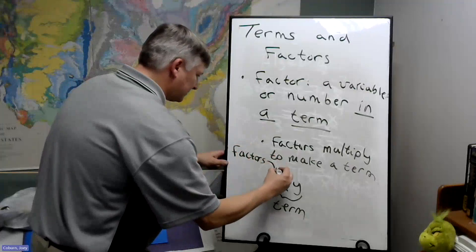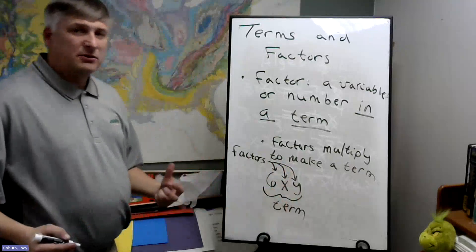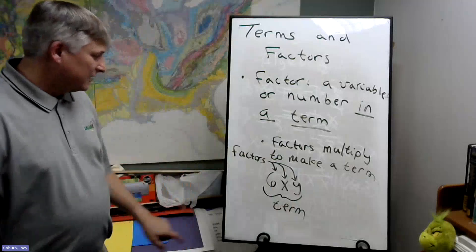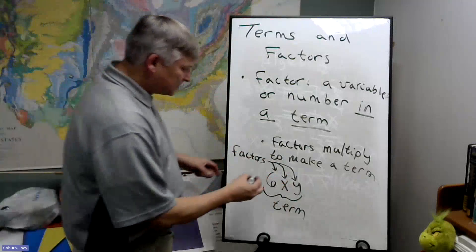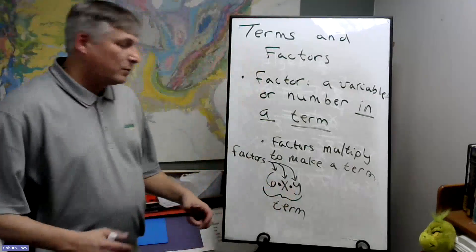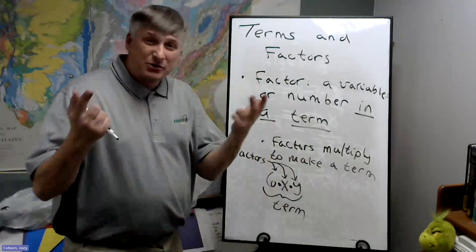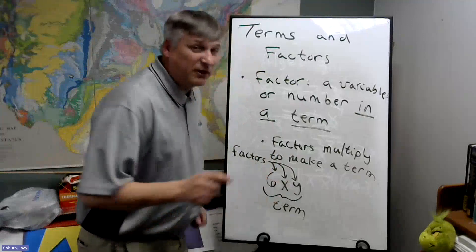And the factors are the parts of the term multiplied together, again using multiplication like glue: six times X, then times Y. And remember, there's some invisible multiplication signs in here when we put the number and the variables next to each other. But in algebra, we don't write those, even though they're still there invisibly.